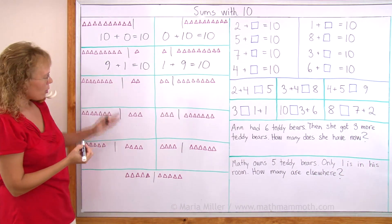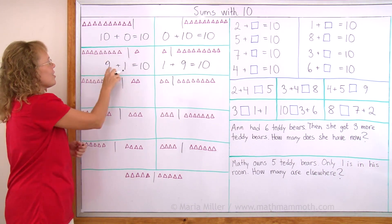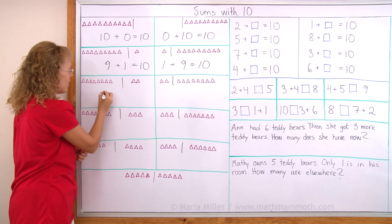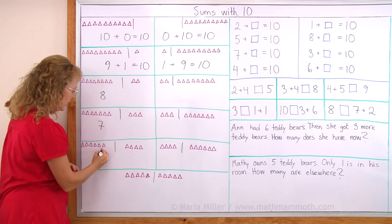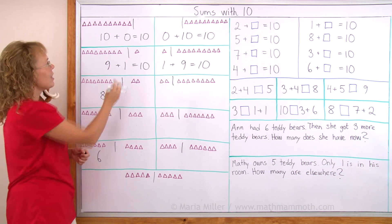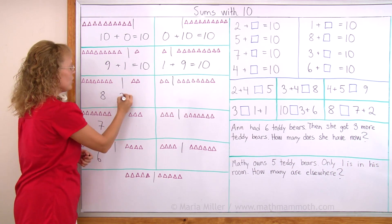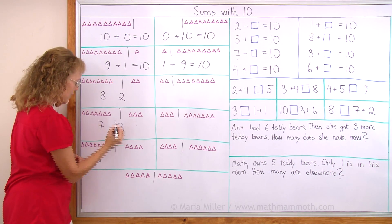And then we go in order. There is a pattern. 10 here, 9 here and then 8 here. And then 7 here and 6 here. Right? And then 0 and 1 and 2 and 3 and 4.